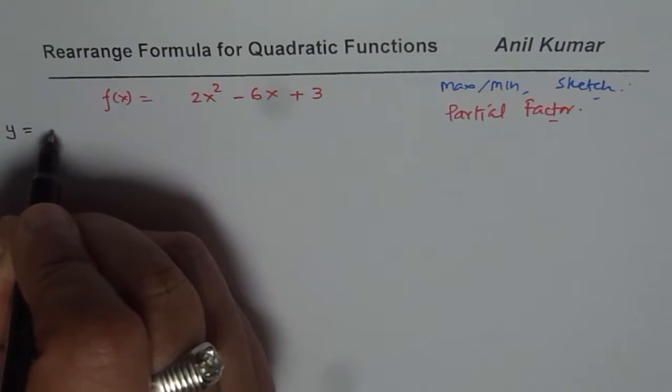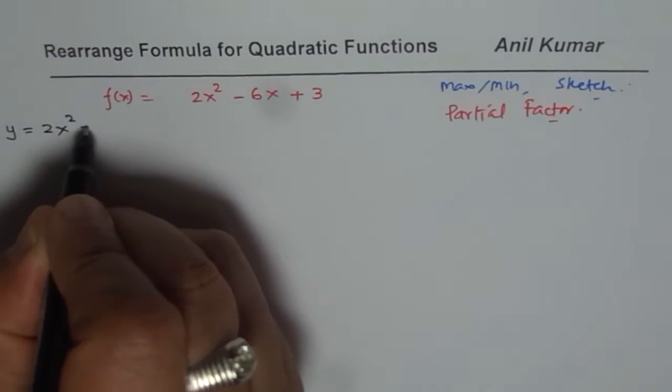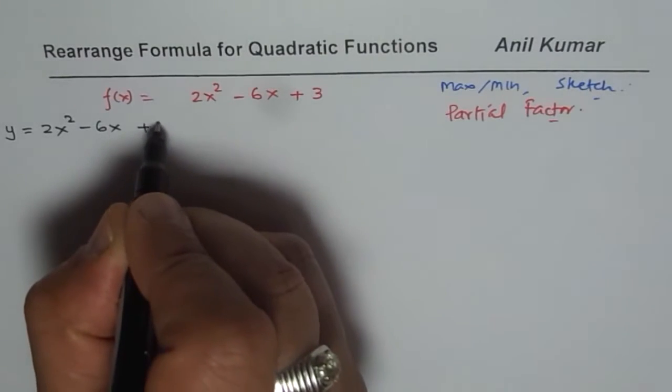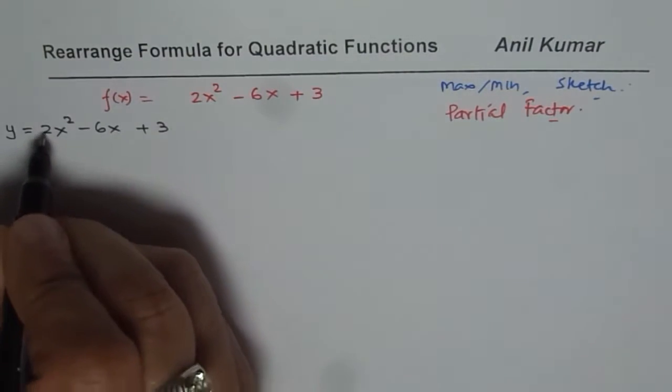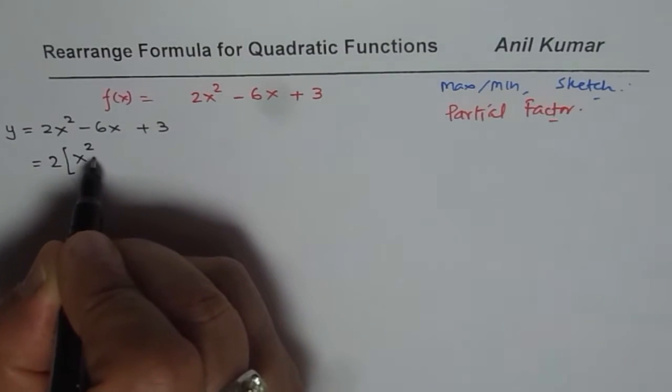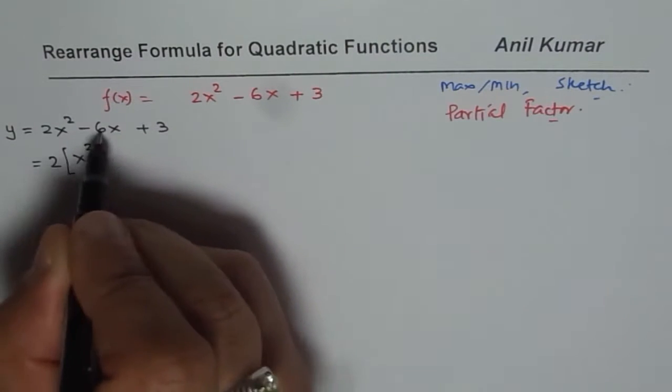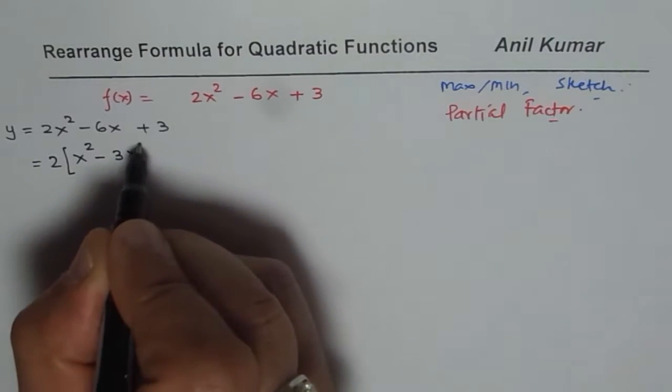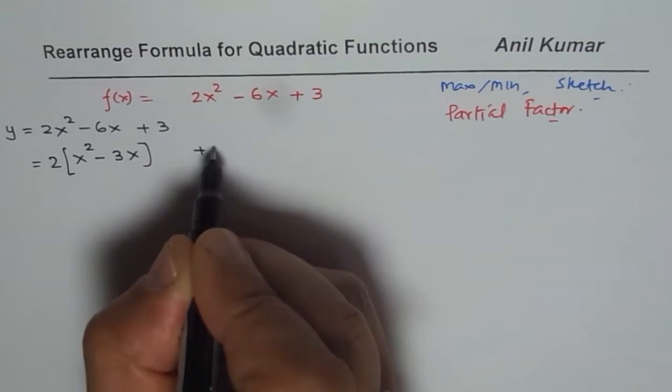Let me write the equation as y equals 2, 2x squared minus 6x plus 3. To complete the square, first factor out the leading coefficient, which is 2 in this case. So we are left with 2, x squared minus 3x. And keep this number 3 away.